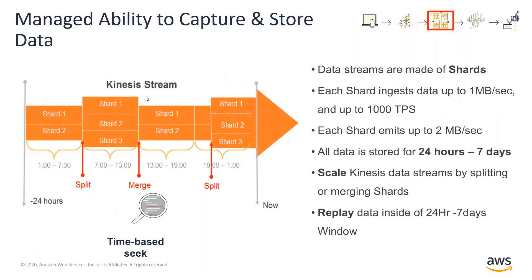So what do you get when you provision a Kinesis Stream? At its core, a stream is made up of shards, and a shard is the fundamental unit of throughput and scale. Each shard gives you the ability to ingest up to one megabyte per second and 1,000 transactions per second, and each shard can emit up to two megabytes per second. By default, you have a retention period of 24 hours, and you can increase this to up to seven days. Kinesis makes it easy to scale in and out depending on your workload needs by changing the number of shards, or you can split an existing shard into two or merge two shards into one, giving you a lot of flexibility.